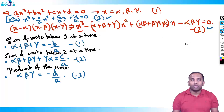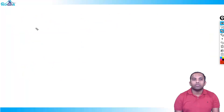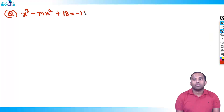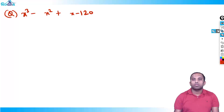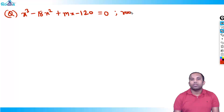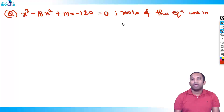Let me write a question to understand this concept. The equation is x³ − 18x² + mx − 120 = 0. The roots of this equation are in AP (arithmetic progression). Find the value of m.